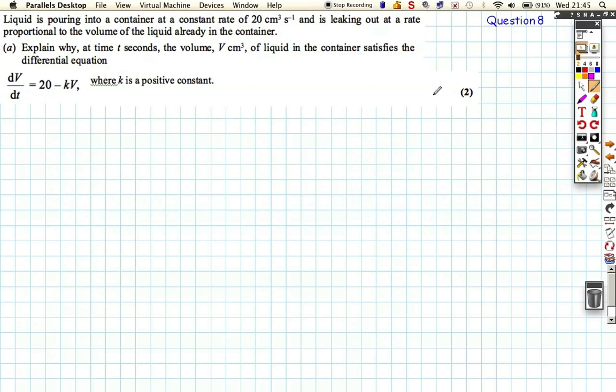So we've got liquid pouring into a container at a constant rate of 20 cm³/s, and it's leaking out at a rate proportional to the volume of the liquid already in the container. Explain why at time t seconds the volume V of the liquid satisfies the differential equation dV/dt equals 20 minus kV.